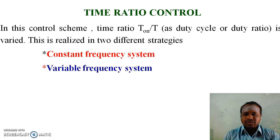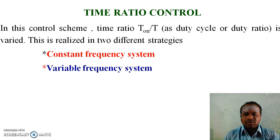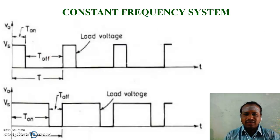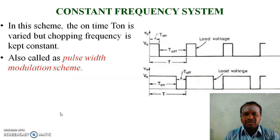In time ratio control, the time ratio — that is, Ton by T, also known as duty cycle or duty ratio — is varied. This is realized in two different strategies: constant frequency system and variable frequency system. In the constant frequency system, Ton is varied but T is kept constant. The on time, Ton, is varied but chopping frequency is kept constant. This constant frequency system is also known as pulse width modulation, because the pulse width, that is the on period, is varied.